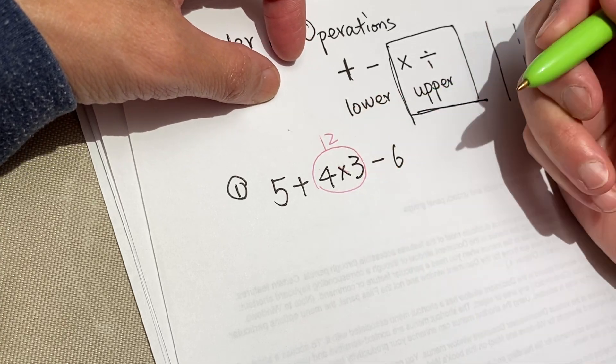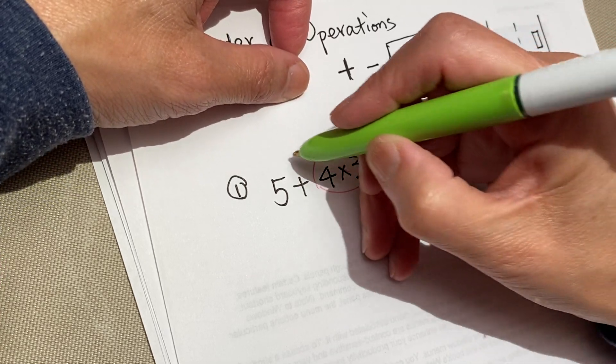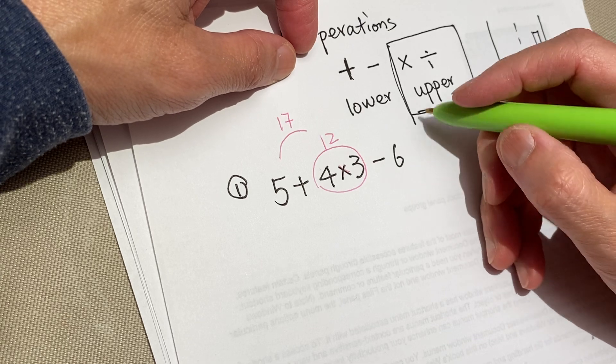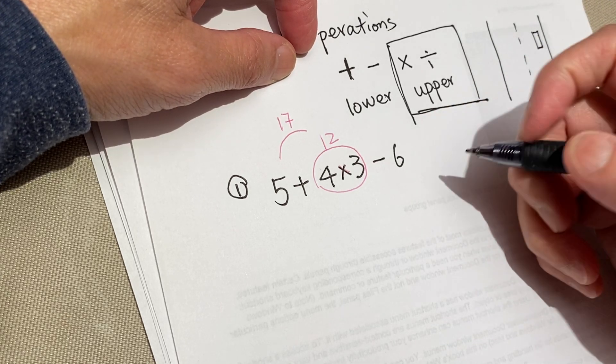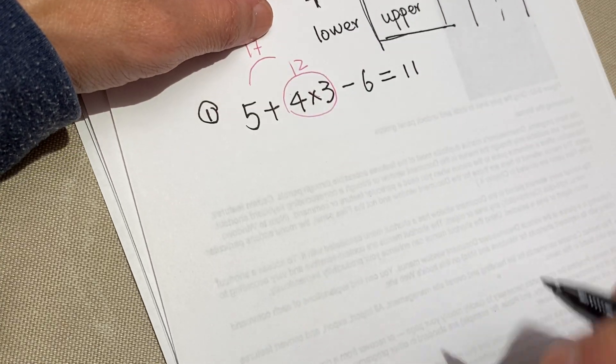So we get this one, 12. 5 + 12 - 6 = 17. You can do even like this: 17 - 6 = 11. Okay.